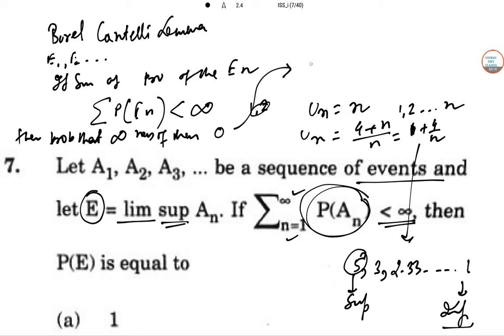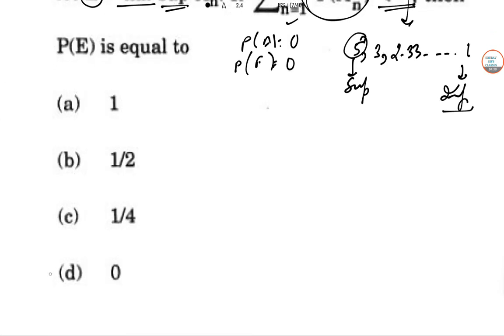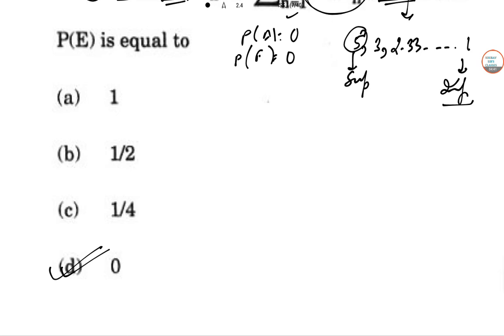So infinitely many of them will not be occurring. So the probability that limit supremum of Eₙ as n tends to infinity is 0. According to this, the probability of A is also 0, and probability of E is also 0. So obviously option D is the correct answer.